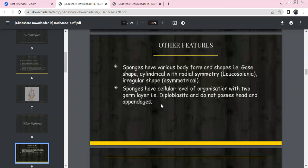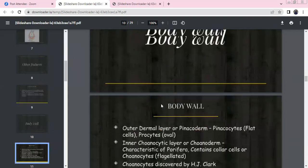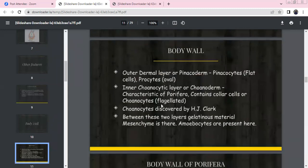Sponges have vase shape or cylindrical forms with radial symmetry. Leucosolenia has radial symmetry. Irregular forms are asymmetrical. Sponges have cellular level of organization with two germ layers, diploblastic. From the ectoderm, we have pinacoderm with flat cells called pinacocytes and porocytes.